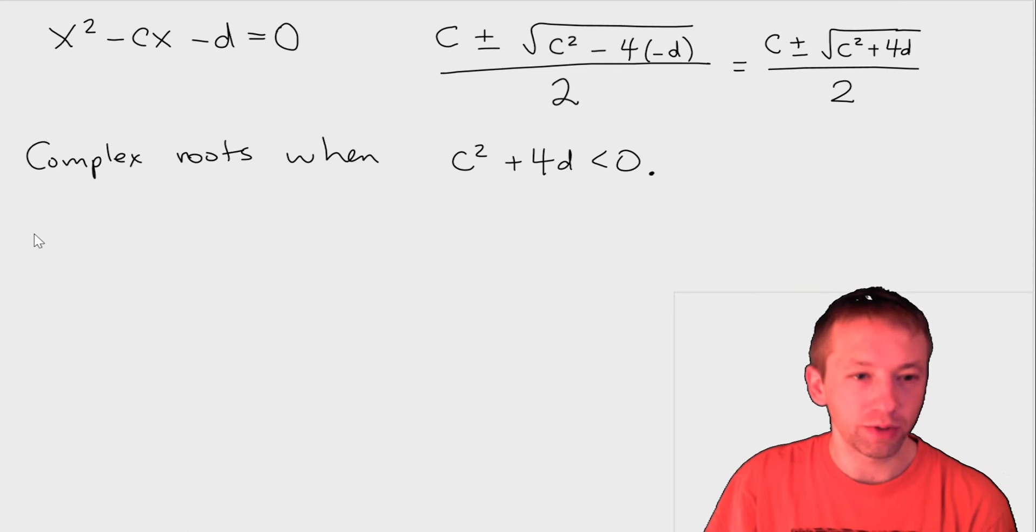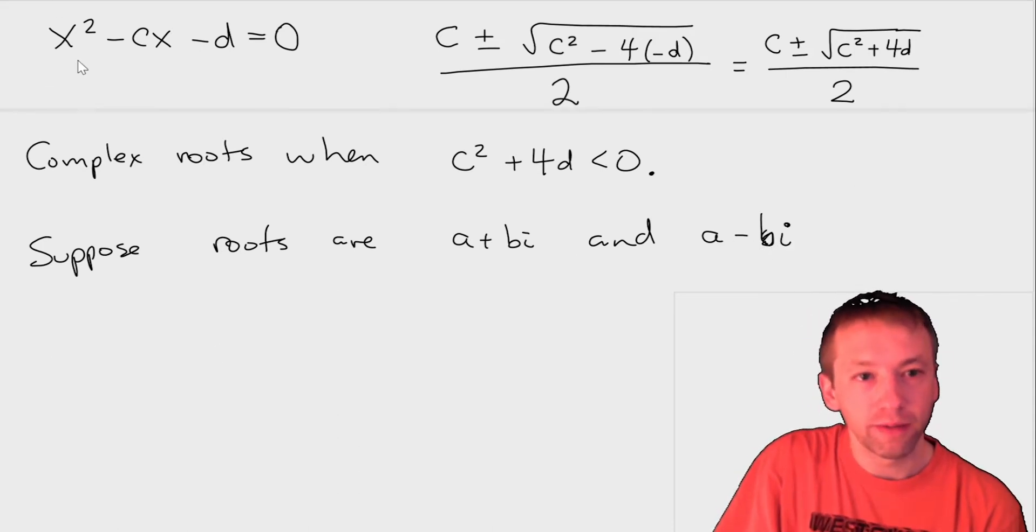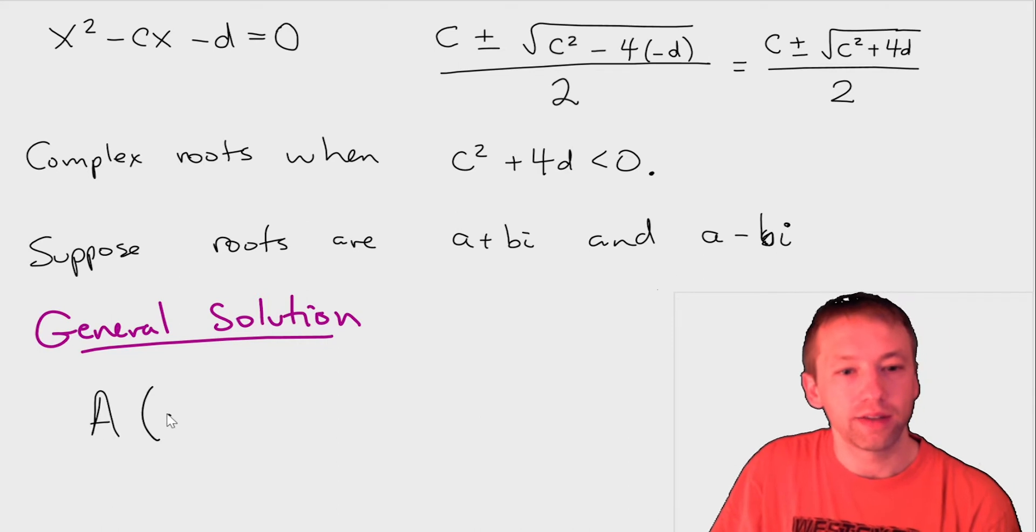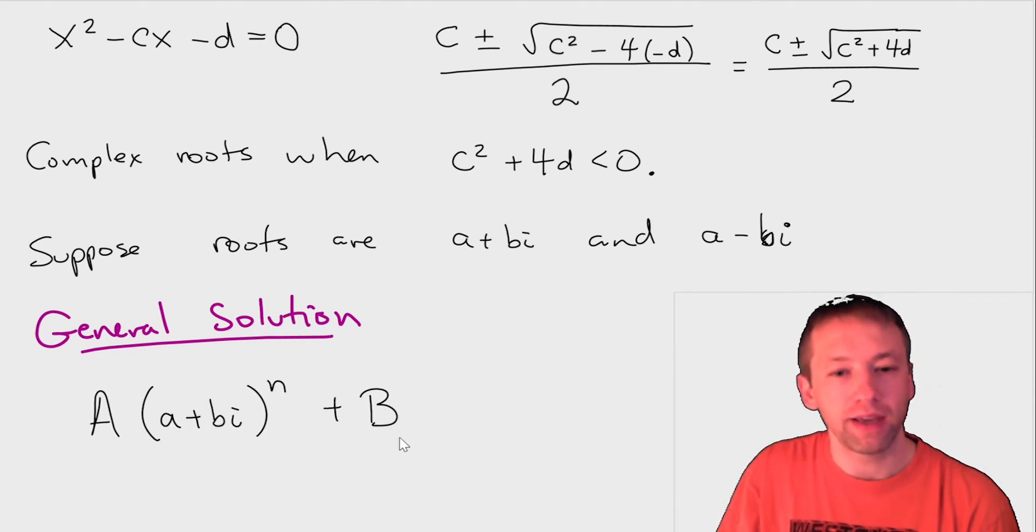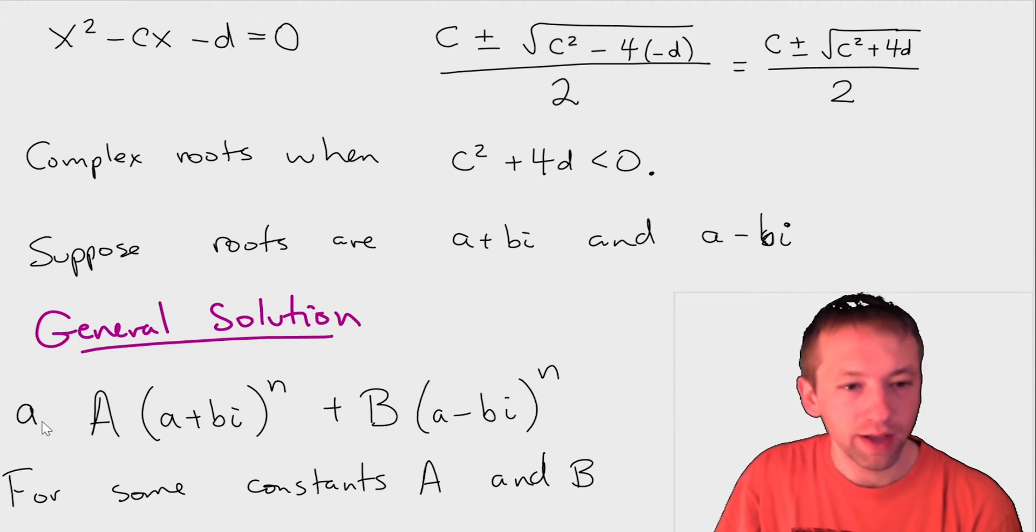So let's say the roots are a + bi and a - bi. Then what we learned in class is that the general solution is capital A times (a + bi)^n plus capital B times (a - bi)^n for some constants A and B. And this is our general solution for a_n.